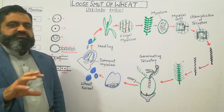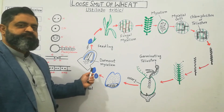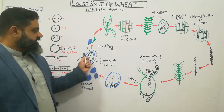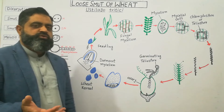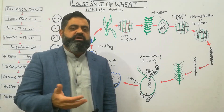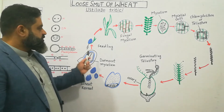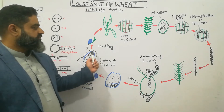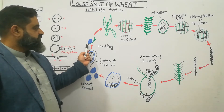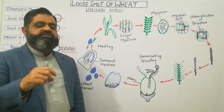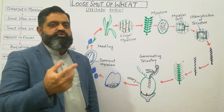Next year the farmer sows the seeds of wheat in the field. When these seeds germinate in the soil, the dormant mycelium also starts to multiply and divide. This is a seedling — a small plant coming from the seed sown in the soil — and at the same time as the seedling grows, the fungal mycelium also starts to grow.